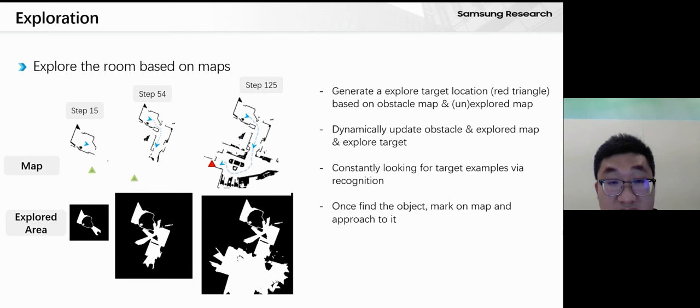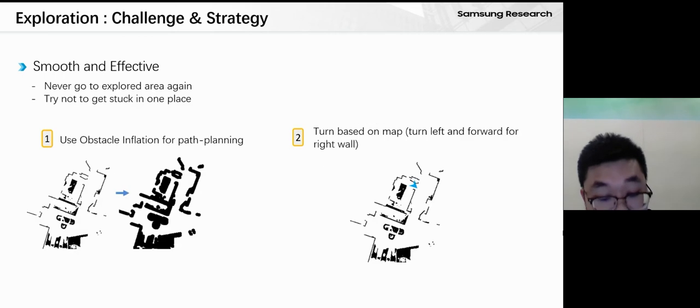We also notice that the agent can very easily get stuck in narrow spaces, so we make two strategies to handle this problem. First, we use an obstacle inflation strategy to make obstacles bigger, so the robot stays farther from the wall.